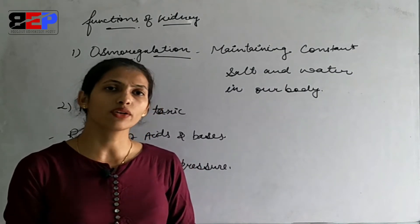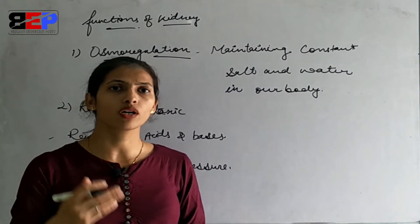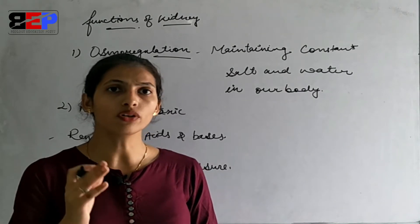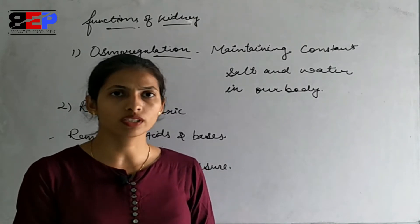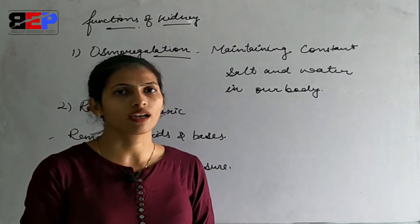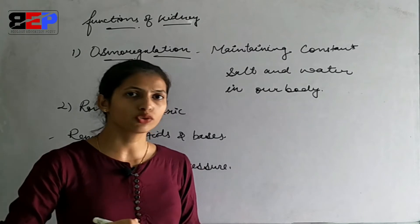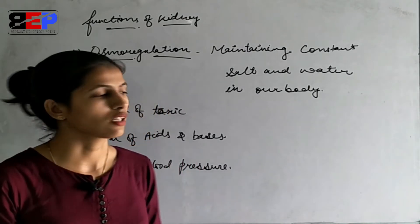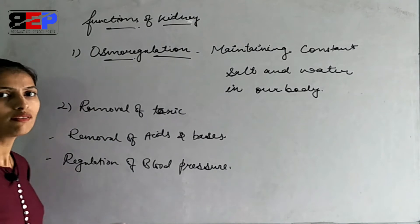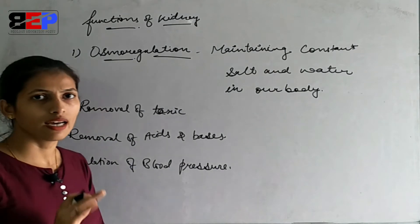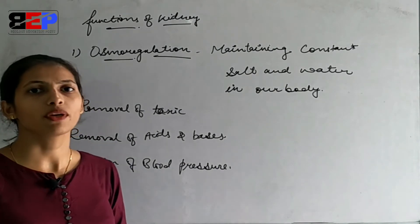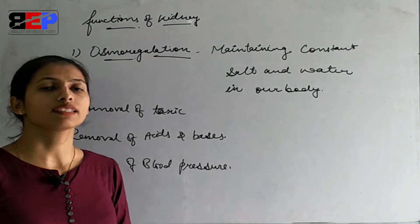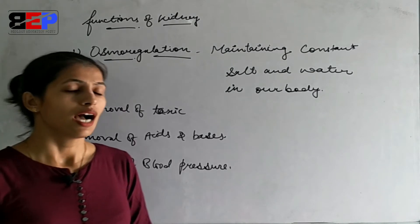The reason is that in our body the amount of blood must remain constant. Excess blood would increase pressure, so these are the functions of the kidney other than the formation of urine. Now we will discuss the artificial kidney.